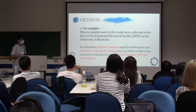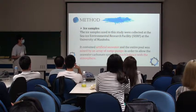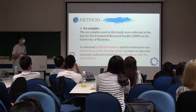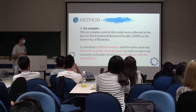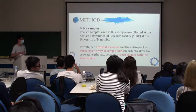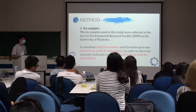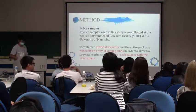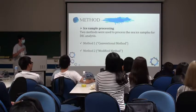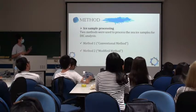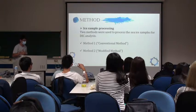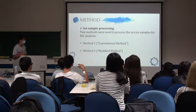Method. Before doing the experiment, ice samples were used. The ice samples were collected at the Sea Ice Environmental Research Facility at the University of Manitoba. The pool contains artificial seawater, and the entire pool was mixed by an array of pumps to allow the seawater carbonate system to reach balance with the atmosphere. After getting the ice samples, two methods were used to process the sea ice sample for DIC analysis: method one is the conventional method, and method two is the modified method.